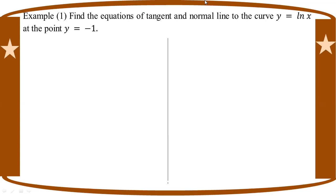Equation of tangent: y minus y1 equal to y prime into x minus x1. Equation of normal line: y minus y1 equal to negative reciprocal, minus 1 over y prime, into x minus x1.